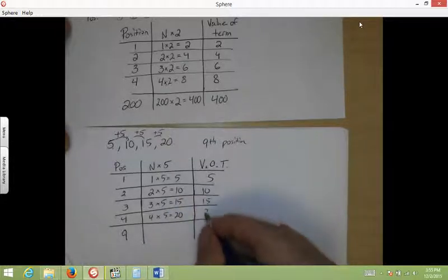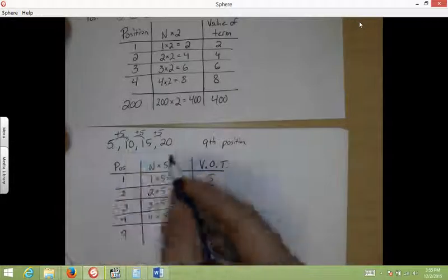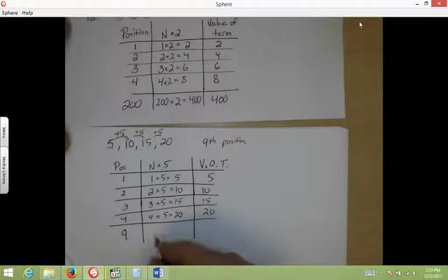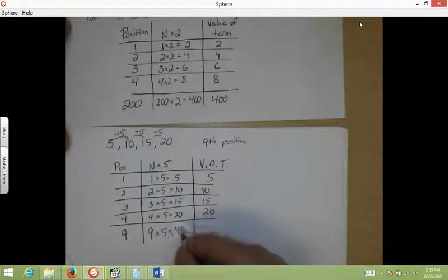And that's the same exact pattern. So we know that our equation is good here, our algebraic expression. So now, let's see what happens for position 9. 9 times 5. 9 times 5 is 45. So, we know the value is going to be 45.